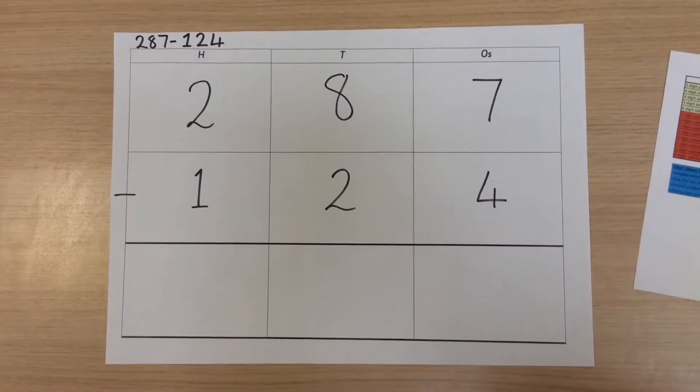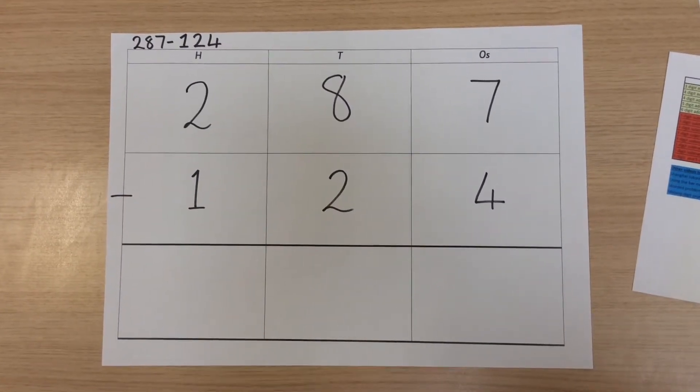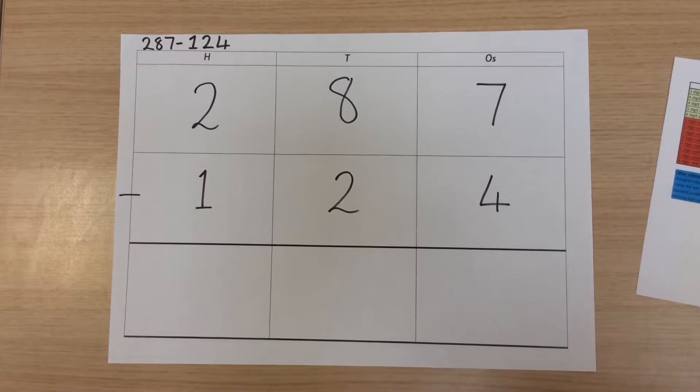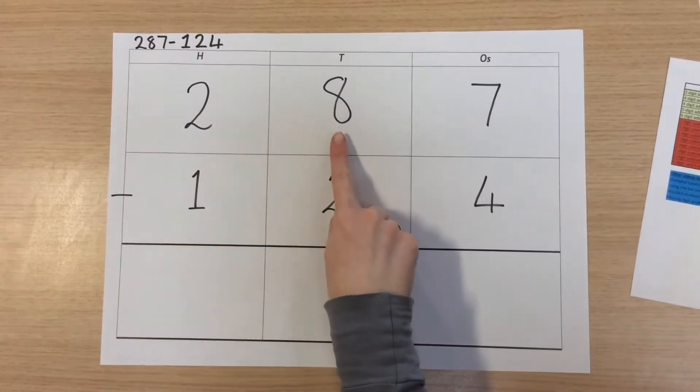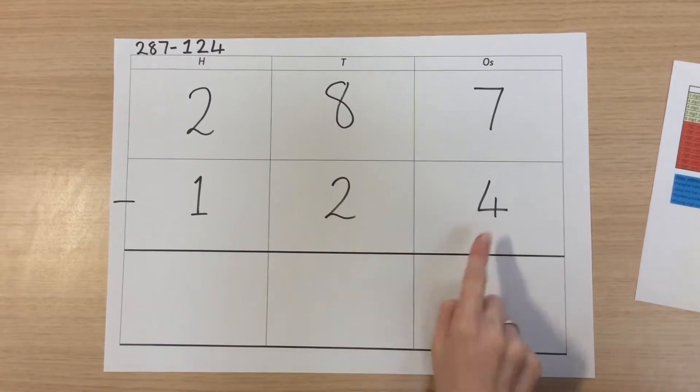The calculation we'll be using is 287 take away 124. We'll begin by writing the numbers into each place value column, 287 take away 124.